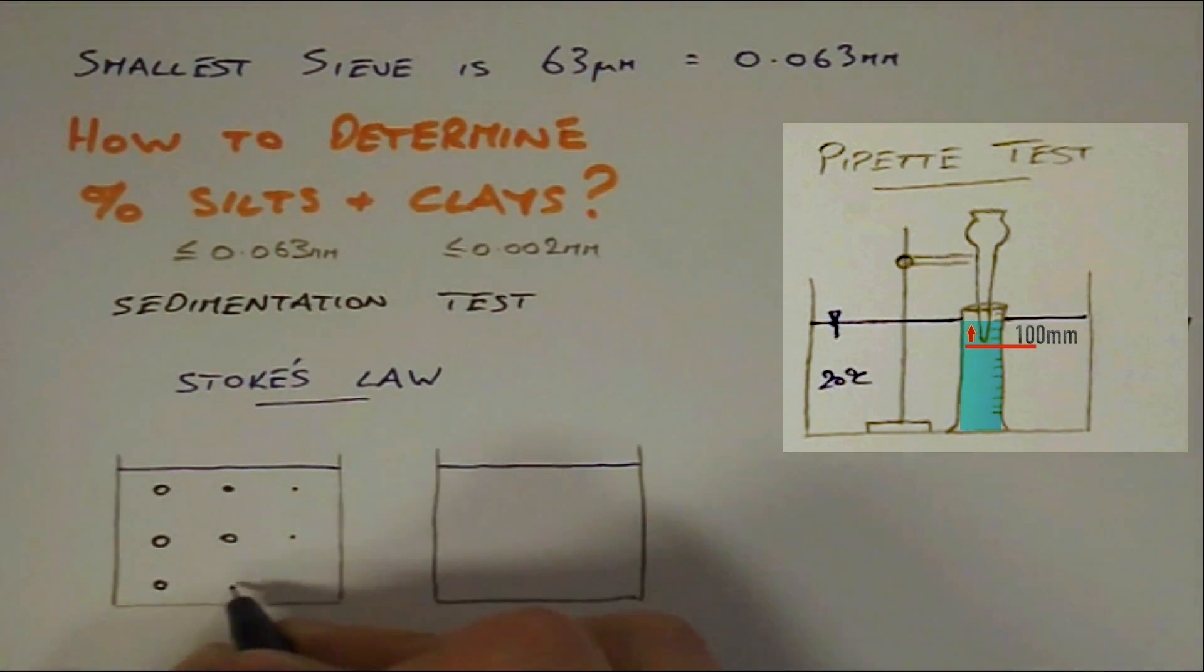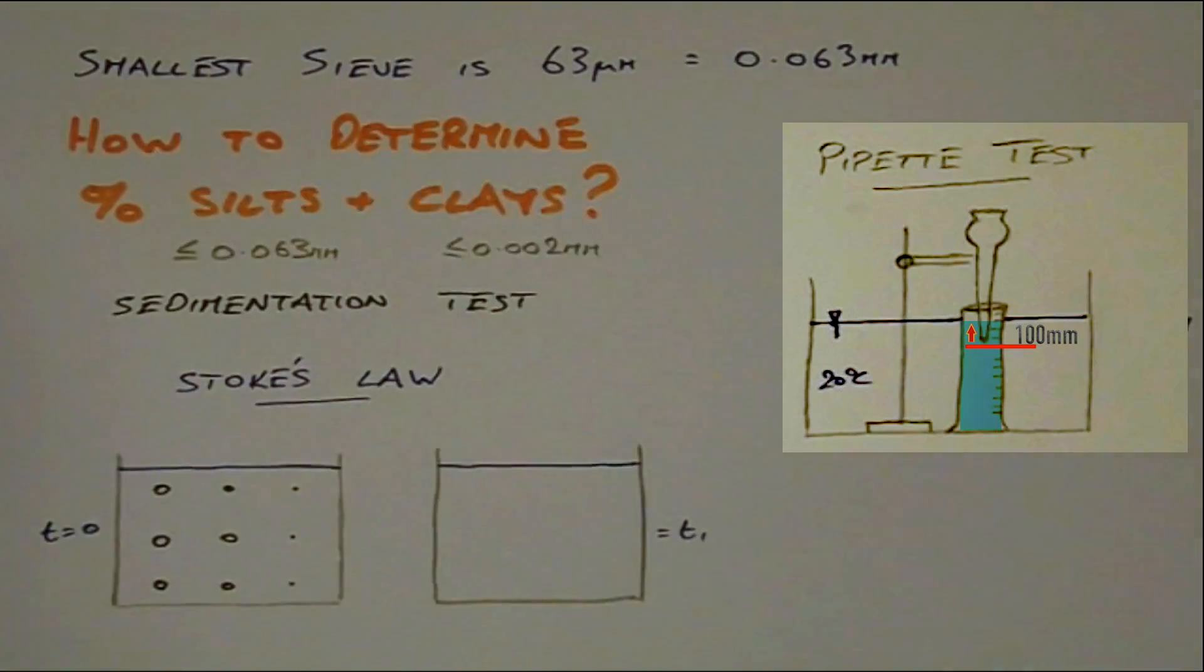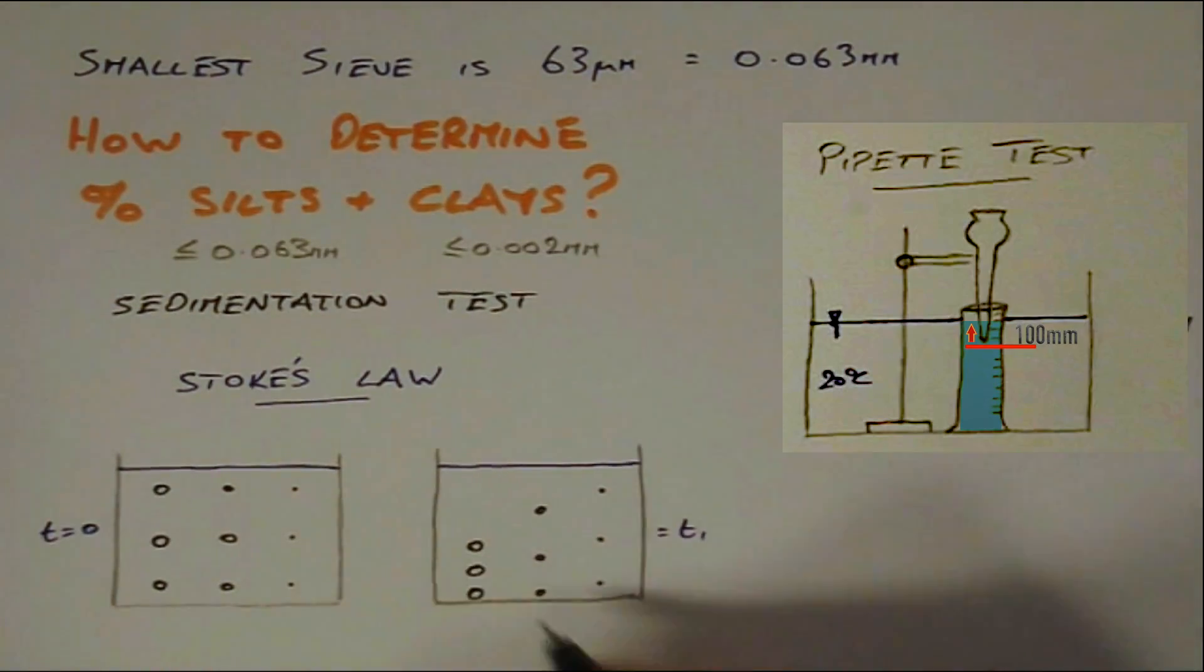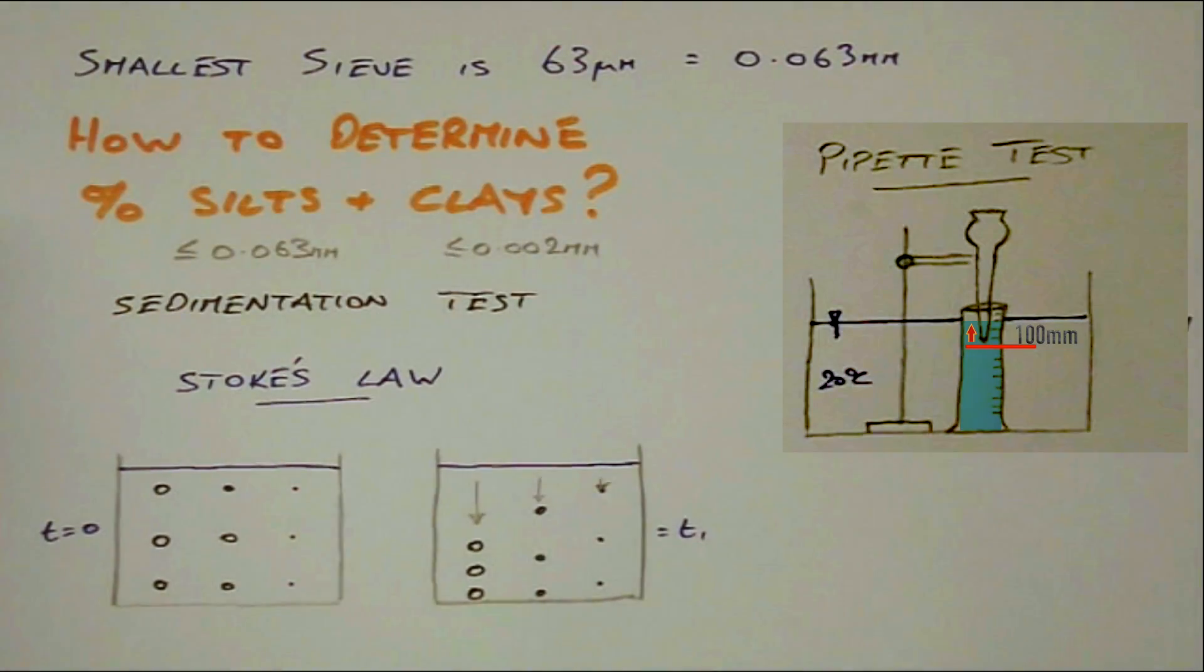During each time interval, the larger diameter soil particles will settle faster than the smaller diameter particles. And using Stokes law, we can determine the percentage silt and percentage clay present.